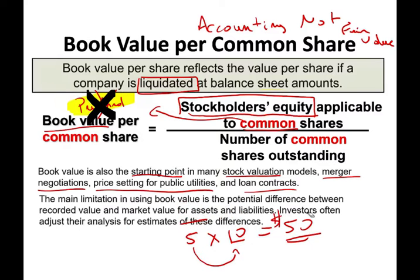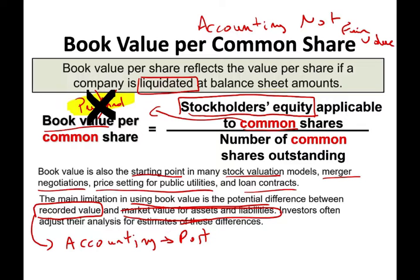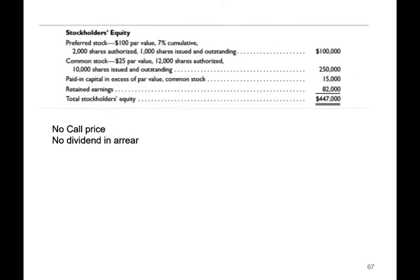The limitation of the book value is obvious — you are using recorded value, which is accounting values and accounting numbers. Remember, accounting always reflects the past; we are not using market value. Investors often adjust their analysis for the difference, saying here's the book value, and then making adjustments to see how much the company is worth if we convert everything to fair market value.